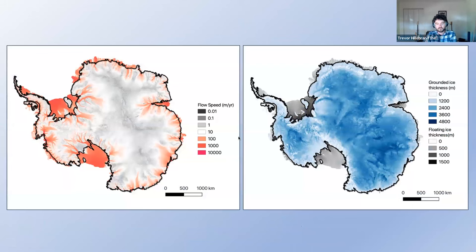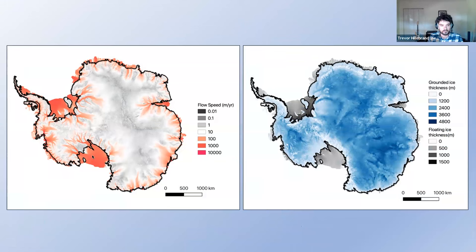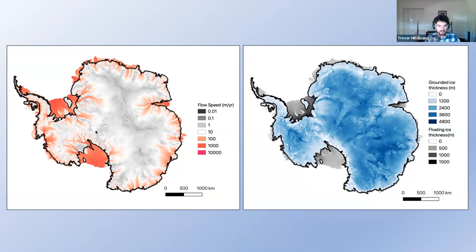Here we're looking at two maps of Antarctica. On the left, I have the flow speed from observations on a logarithmic color scale, ranging from centimeters to meters per year in the interior of the continent out to kilometers per year towards the margins. This black contour is what we call the grounding line, which is the point at which ice flowing towards the ocean goes afloat. Everything inside this contour is ice resting on land and everything outside is floating on seawater.